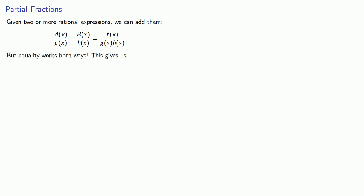This leads to the following. Suppose I have two or more rational expressions. We can use the standard rules of algebra to add them to produce a single rational expression. But equality works in both directions and what this means is that we can take a single rational expression and write it as a sum of rational expressions.